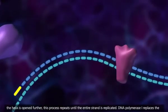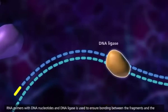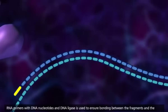DNA polymerase 1 replaces the RNA primers with DNA nucleotides, and DNA ligase is used to ensure bonding between the fragments.